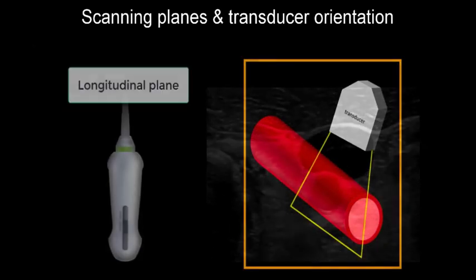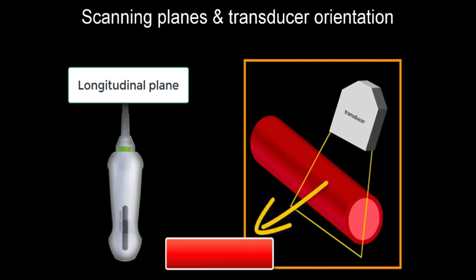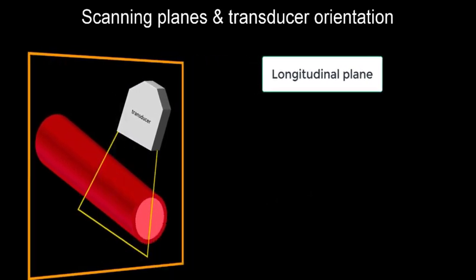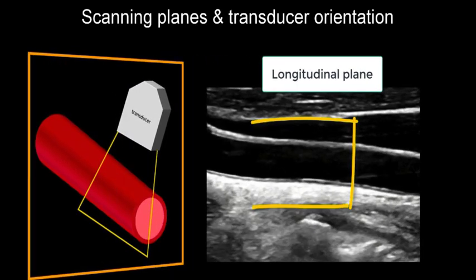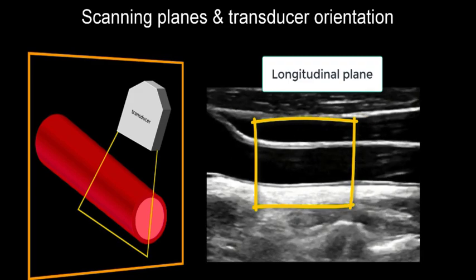In the longitudinal view, we have the transducer parallel to the surface of the blood vessel, and the image that we will obtain is the one of a rectangular shape. As shown in this ultrasound video, we can see a longitudinal view of the common carotid artery.